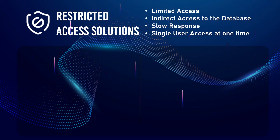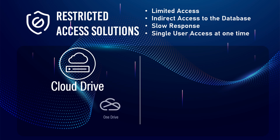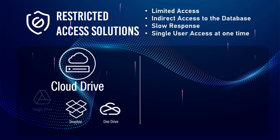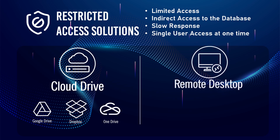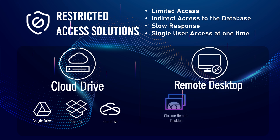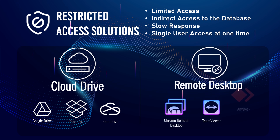It is not advisable to use the first online solution due to its many restrictions, including allowing only one user access at a time and having a comparatively slow data response. On the other hand, the remote desktop system also allows access to the database by only one user at a time, and the target machine must be operational 24/7. However, you can work on your database from a remote location without accessing the database directly.